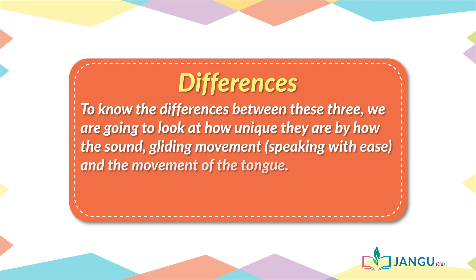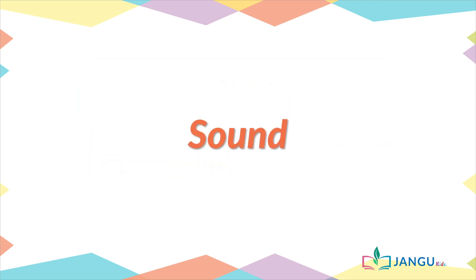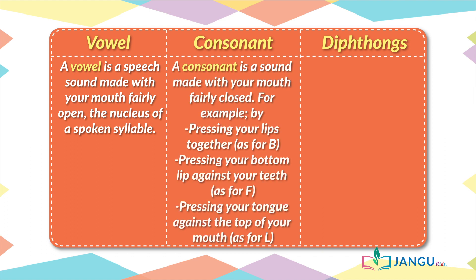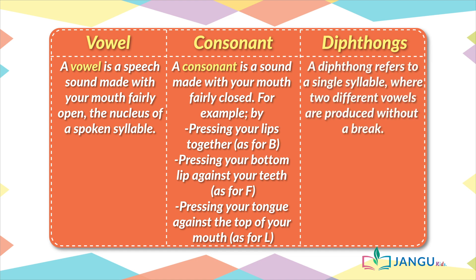Differences. To know the differences between these three, we are going to look at how unique they are by how they sound, gliding movement which is speaking with ease, and the movement of the tongue. A vowel is a speech sound made with your mouth fairly open. A diphthong refers to a single syllable where two different vowels are produced without a break.